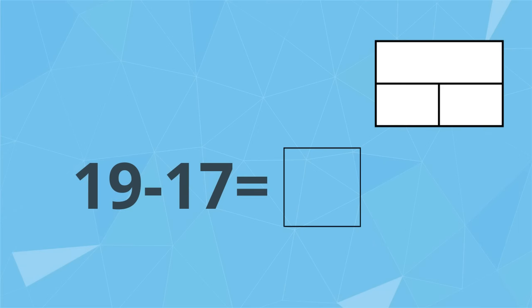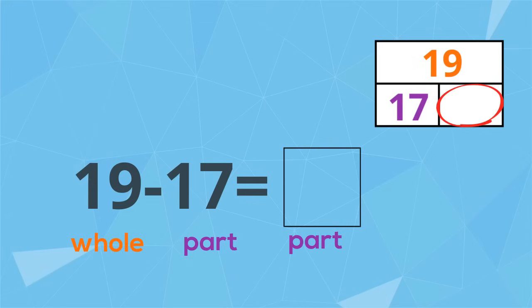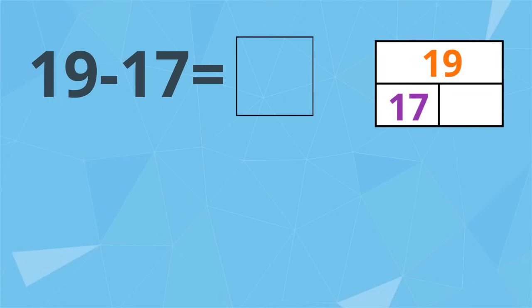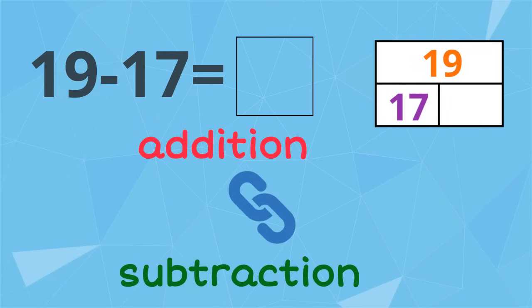Let's take a look at this equation: 19 take away 17. 19 is the whole, 17 is the part that we must take away. The equation is asking us to work out what part will be left over. We could work this out by subtracting 17 from 19, but there's an easier way. Let's use the relationship between addition and subtraction to turn this problem around.